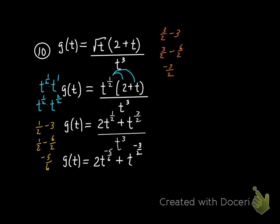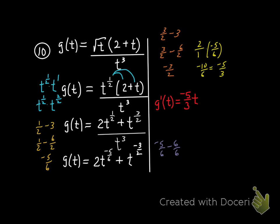So g prime of t equals, I go negative 5, 6 times 2. And get negative 10, 6, which can be reduced to negative 5 thirds. Ding! Negative 5 thirds t. Now I've got to subtract 1 from negative 5, 6. Which is negative 11, 6. That's how I get that exponent.